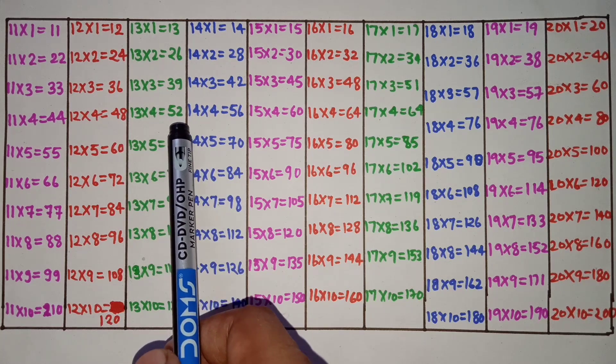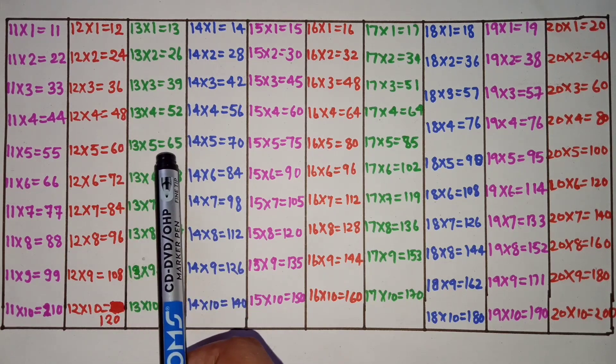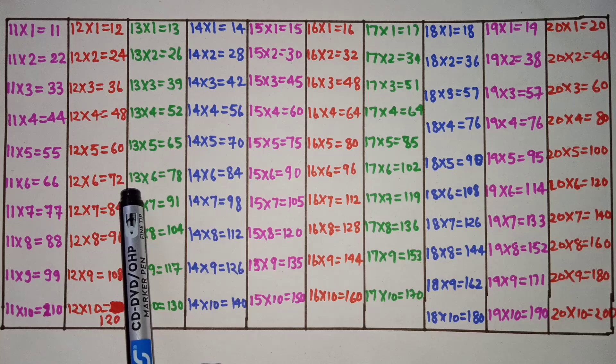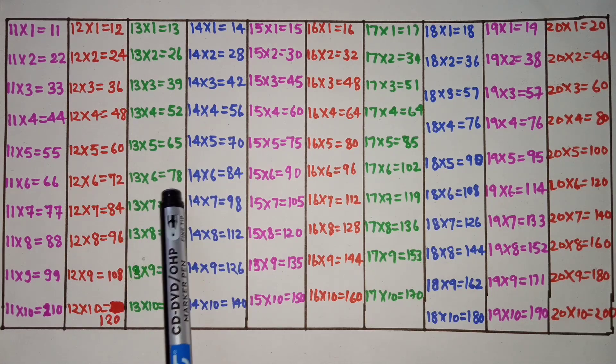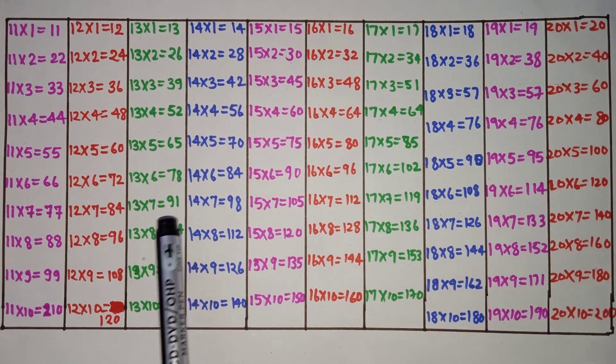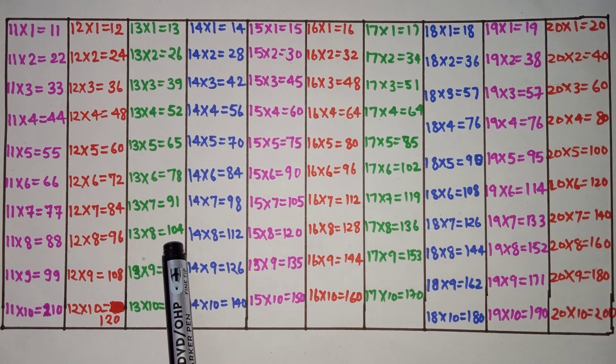13 threes are 39, 13 fours are 52, 13 fives are 65, 13 sixes are 78, 13 sevens are 91.